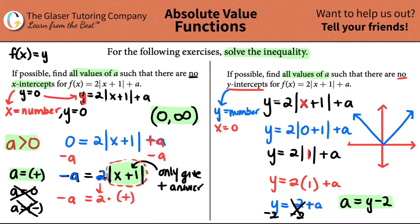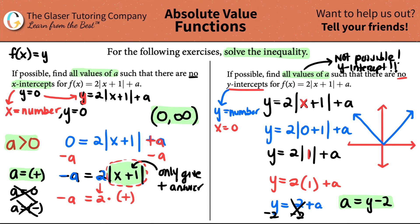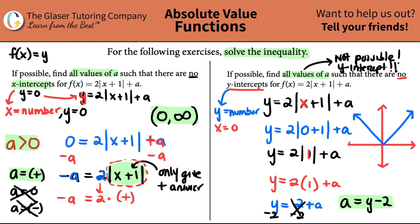And there will always be a y-intercept. The question is asking, if possible, find all values in which there are no y-intercepts. However, absolute value graphs are always going to extend infinitely, so they will always pass the y-axis — there will always be an intercept. So are there any values in which there will not be a y-intercept? No. This is not possible. There will always be a y-intercept. So there are no values of a such that there are no y-intercepts.